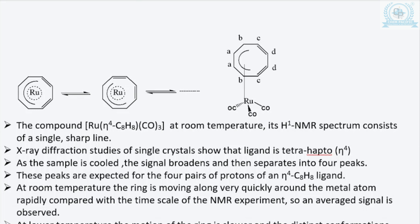Moving to the next example: in this case the group of atoms is the ruthenium carbonyl group, which is whizzing around the overall C8H8 (cyclooctatetraene) ligand system. According to X-ray diffraction studies of single crystals, it has been found to be in the eta-4 mode.